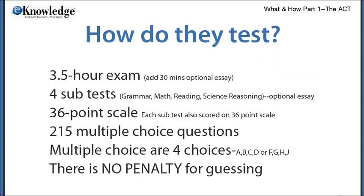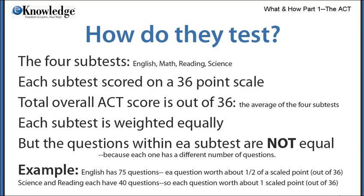The ACT is a three-and-a-half to four hour exam with four mandatory graded sections. The essay is optional and will add about another 30 minutes. It is graded on a 36-point scale. There are 215 multiple choice questions and there is no penalty for guessing, so guessing is mandatory — never leave a question without an answer. Each of the four subtests is scored on a 36-point scale, and then all four are averaged together to give you an overall ACT score. Each subtest is weighted equally to the others.